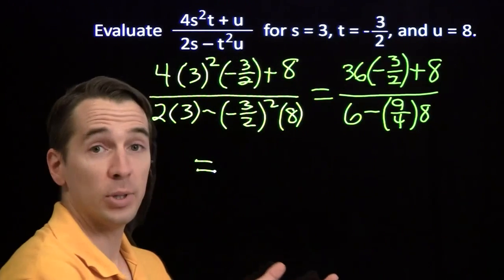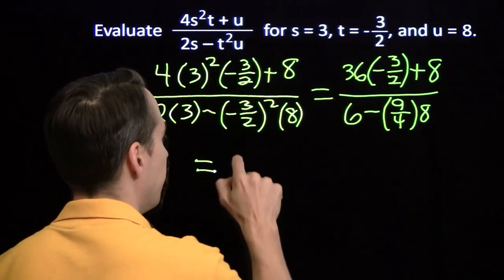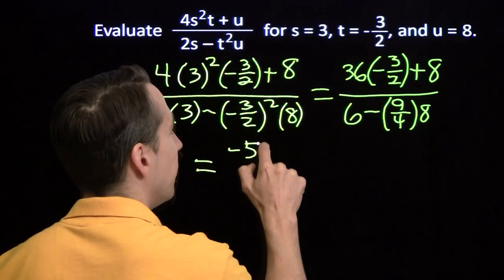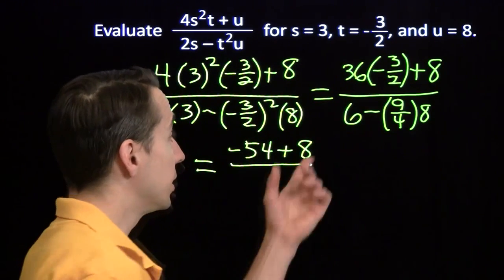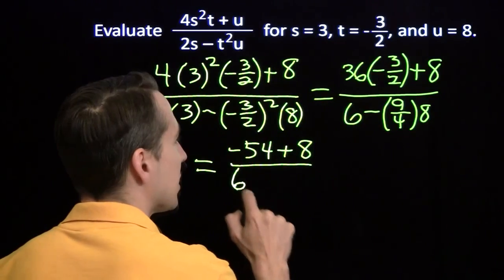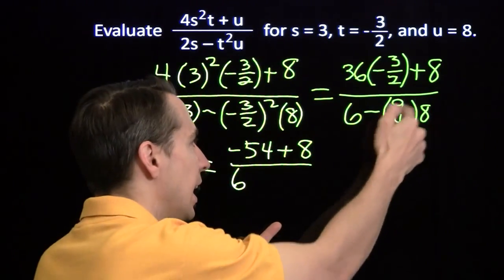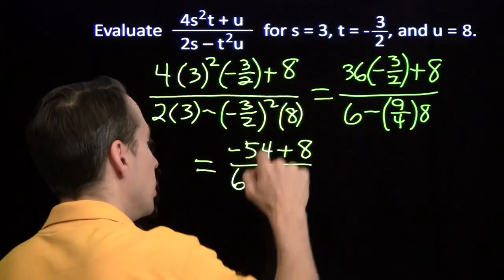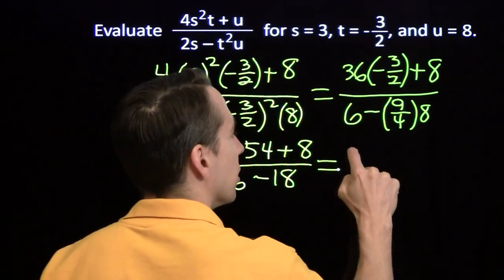36 times negative 3 halves. 36 divided by 2 gives us 18. 18 times the negative 3 gives us negative 54. So you have negative 54 plus 8. And in the denominator, we'll have 6 minus, well, we're going to multiply 9 fourths times 8. 8 divided by 4 is 2. 2 times 9 is 18.